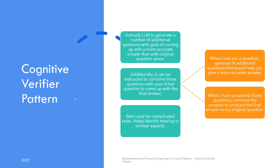You can tweak the goal to nudge the questions in a certain way. For example, if you are trying to do a DIY project at home, you can ask the model to include questions to ensure you have the tools required to accomplish the task, and take your answer into consideration while suggesting the steps for the project.